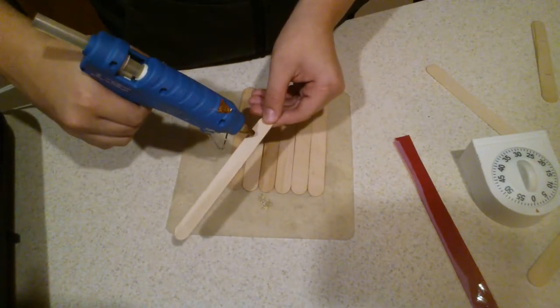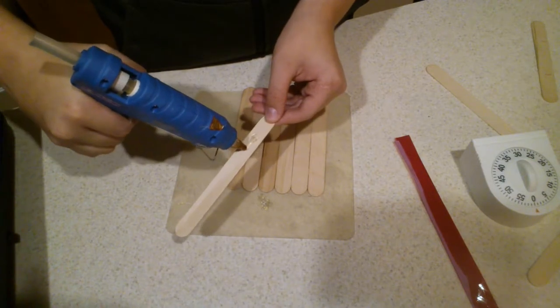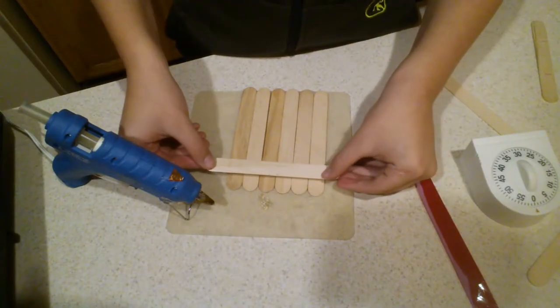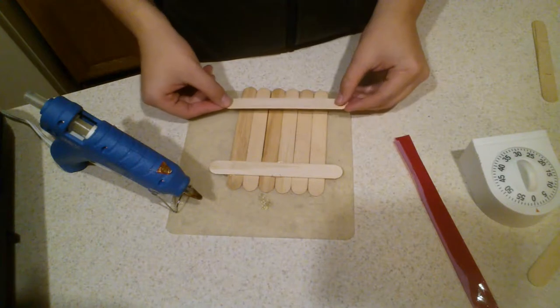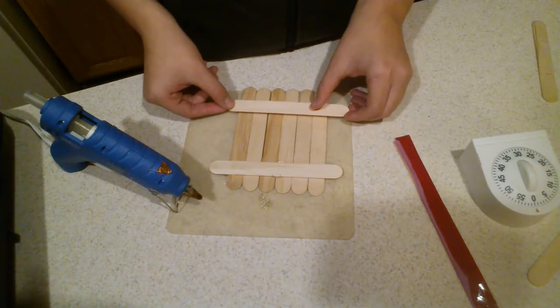I used a hot glue gun to glue a platform out of popsicle sticks for my timer. And let me just say, it's really hot. Like really, really hot.